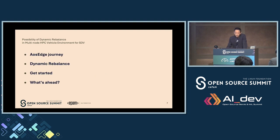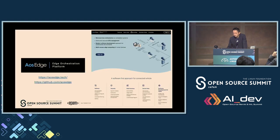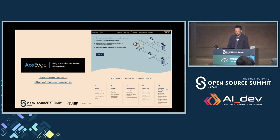With that in mind, we have a product called AOS Edge. I'll go through that and then into today's main theme. AOS Edge is something we've been building for several years. If you go to our website, you'll see a lot of technical information and features. We also have open source code on GitHub. In short, it's an edge orchestration platform.